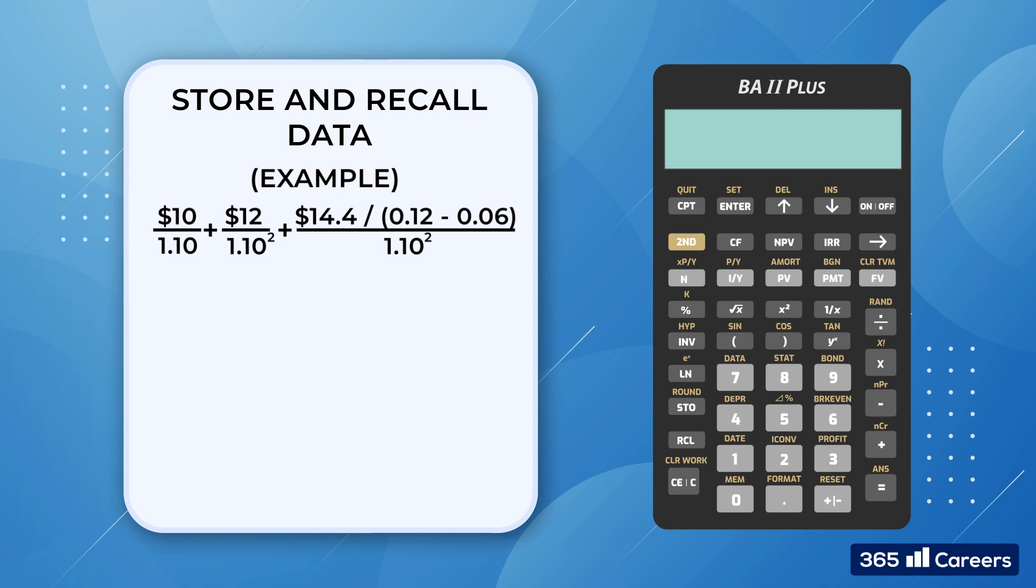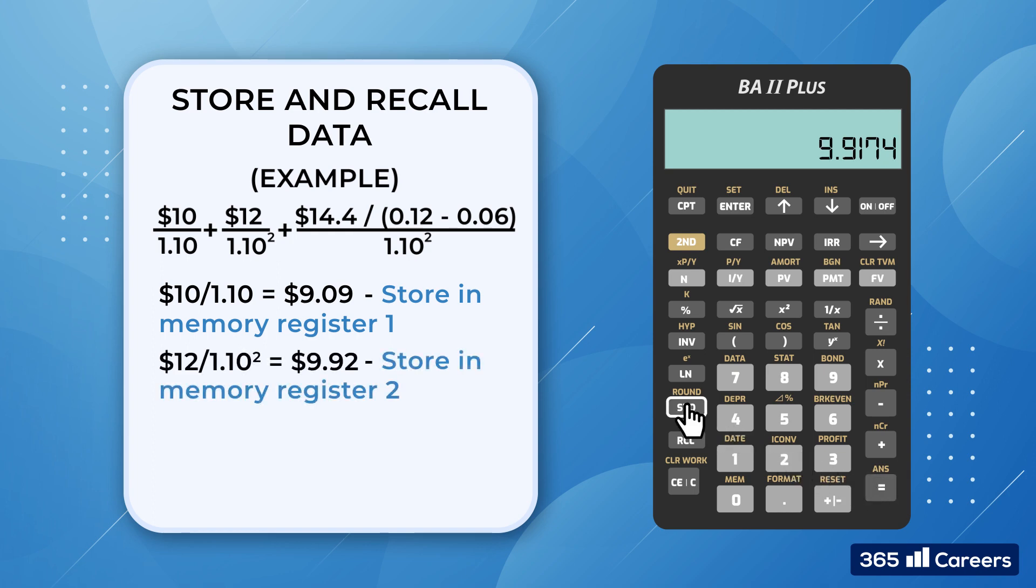Consider a problem related to the dividend discount model. What we will do is solve it in steps and store interim results. So, we have $10 divided by 1.10, which gives us 9.09. Then we press STO, followed by 1 to allocate the value to memory register 1. Then, we have $12 discounted at 1.10 raised to the second degree, which results in $9.92. Similarly, we store the value to register 2.